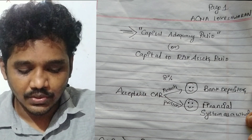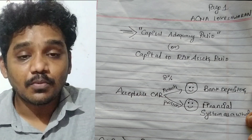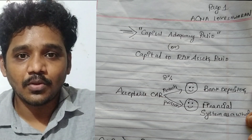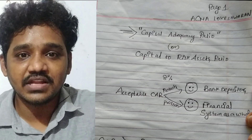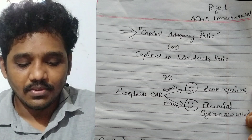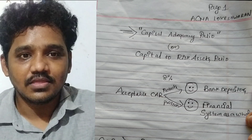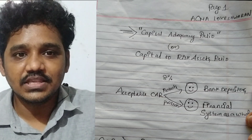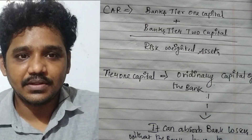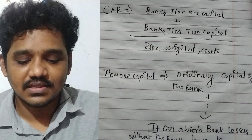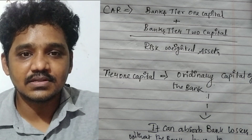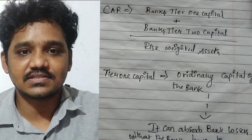Capital Adequacy Ratio protects depositors' funds and also protects the overall financial system. The formula for Capital Adequacy Ratio is: bank's Tier 1 capital plus bank's Tier 2 capital, divided by risk-weighted assets.